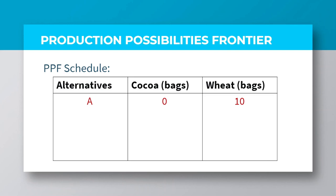At production alternative A, the country produces no cocoa but 10 bags of wheat by employing all its available resources and given technology. At alternative B, the country produces one bag of cocoa and nine bags of wheat. The question is, what is the opportunity cost of producing one bag of cocoa in this case? When the country initially dedicated all its resources and technology into producing at alternative A, this country produced 10 bags of wheat. So, by producing at B, one bag of wheat had to be sacrificed in order to make B possible because it produces nine instead of ten. Thus, the opportunity cost of producing one bag of cocoa is that one bag of wheat which was sacrificed to achieve that production target.